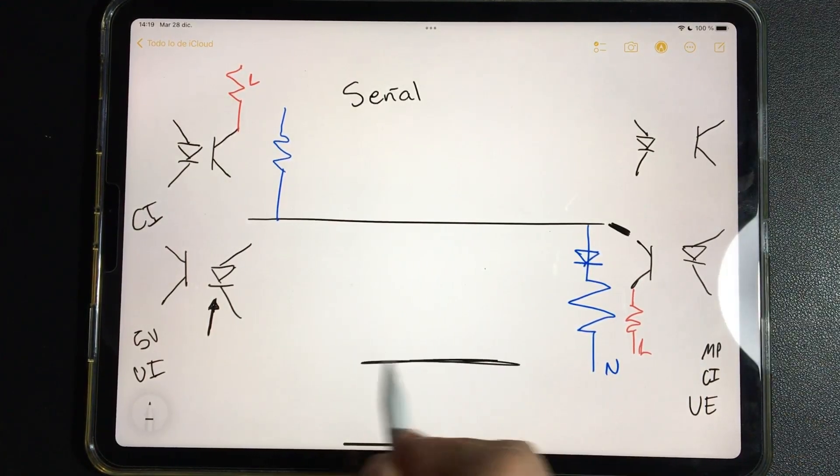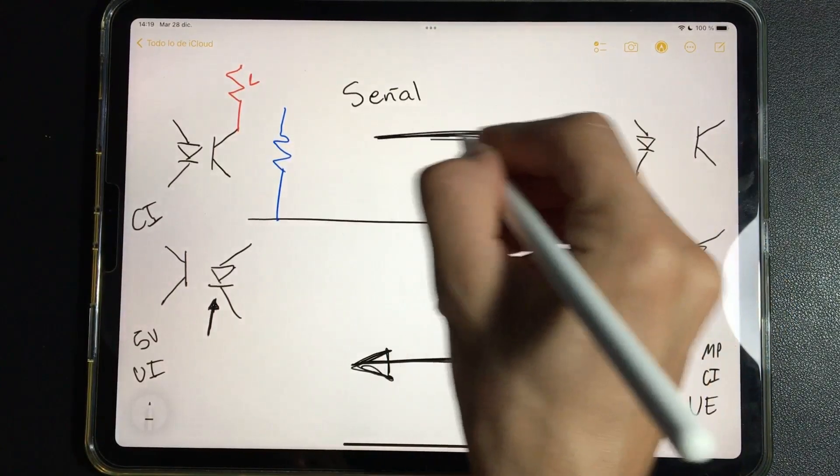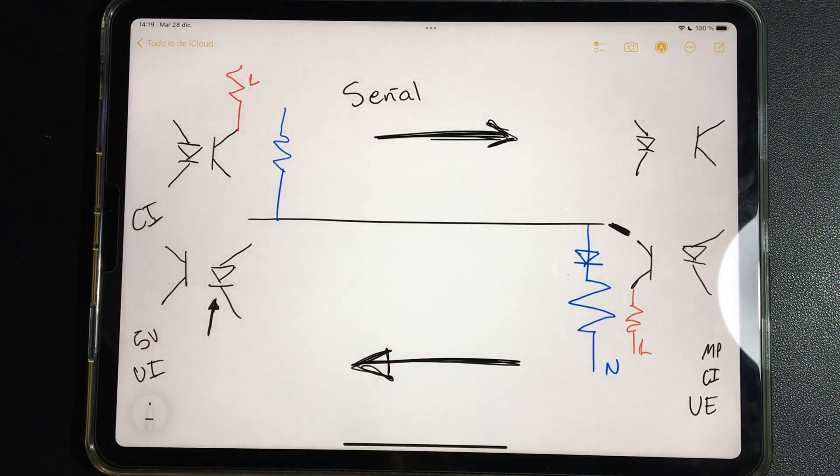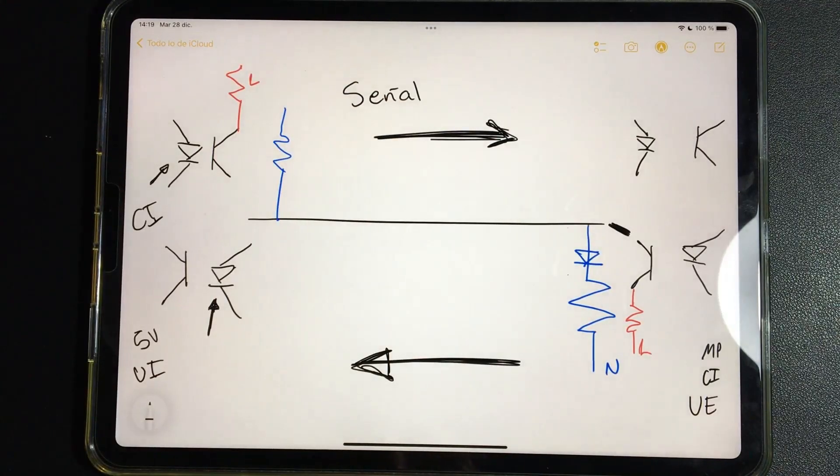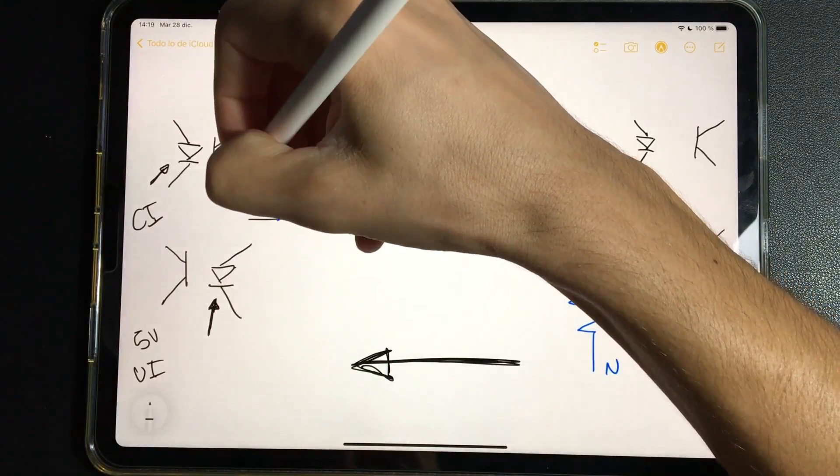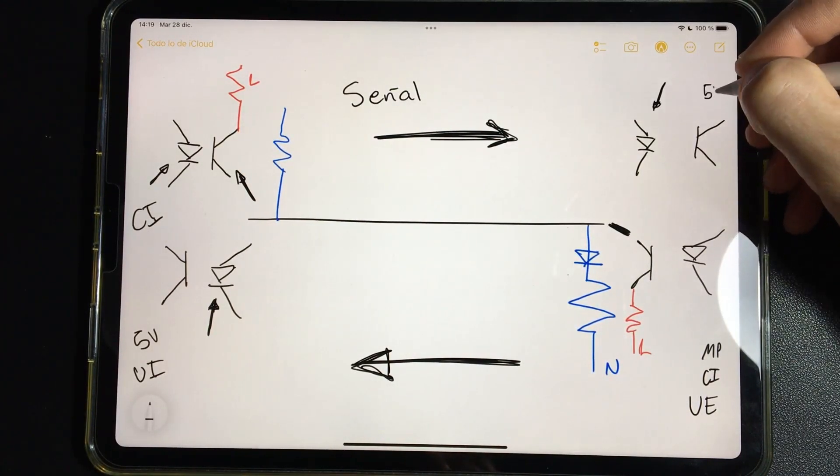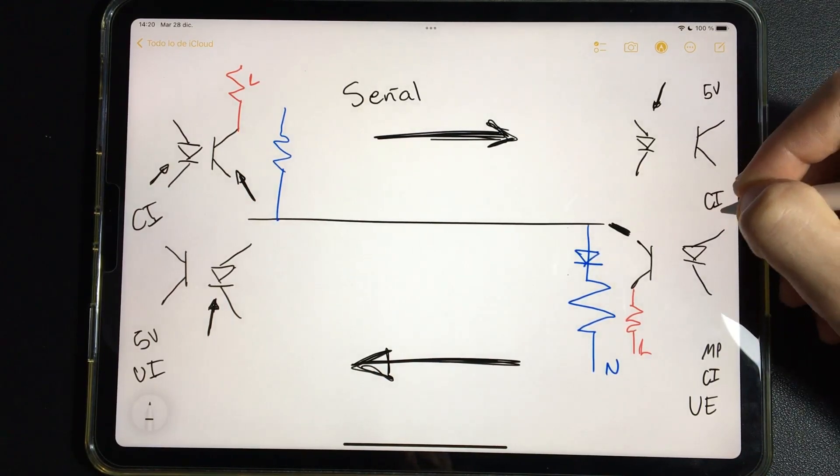This is how the outdoor unit communicates with the indoor unit. If we want to communicate the other way, from the indoor unit to the outdoor unit, what does it do? Well, the integrated circuit turns on this LED. The electrons are derived through here. This LED turns off and from the outdoor unit, with the 5V, that pulse is produced and the microprocessor understands it.